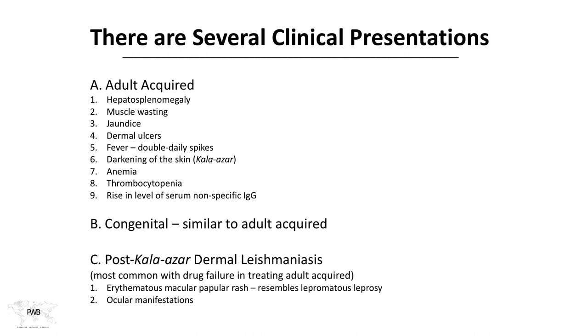The congenital form has many of the same features as the adult form. The post-kala-azar dermal leishmaniasis is less common but probably most important for transmission, as these patients are considered super spreaders. This is often an issue where someone has been treated, there's been a drug failure, and now they present with an erythematous macular papular rash. In many areas, similar rashes could be lepromatous leprosy, so it can resemble that. There can be ocular manifestations, and these areas can be teeming with parasites, making them a critical factor in community spread.